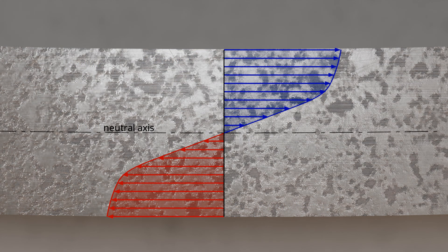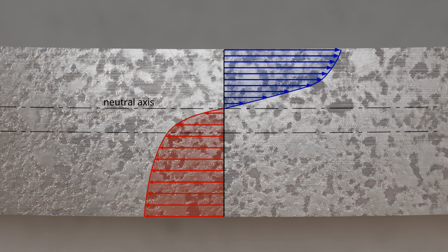Especially for gray cast iron, the stress distribution in the case of a bending load shows a special characteristic. For gray cast iron, the Young's modulus is not constant but depends on the stress — Hooke's Law is no longer obeyed. Gray cast iron also reacts differently to a tensile load than to a compressive load and can withstand compressive stresses to a much greater extent than tensile stresses. Accordingly, a different stress distribution results with overall higher compressive stress values than tensile stress values. Nevertheless, due to static equilibrium, the compressive force must equal the tensile force. Since tensile stresses are at an overall lower level, they must cover a larger cross-sectional area to meet the equilibrium. The unequal stress distribution therefore causes the neutral axis to shift from the geometric center of gravity towards the area of compression.